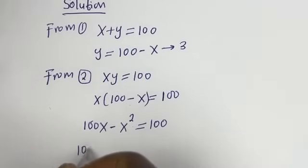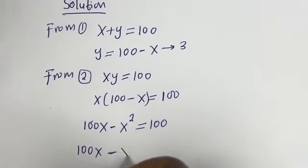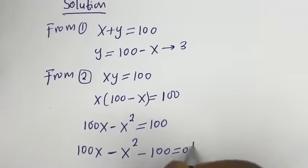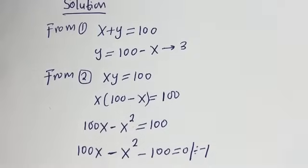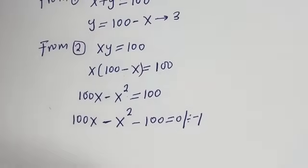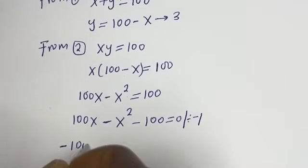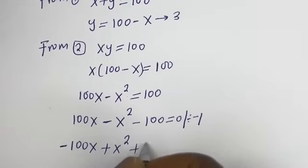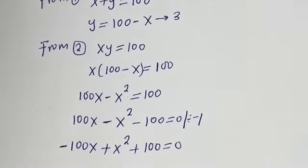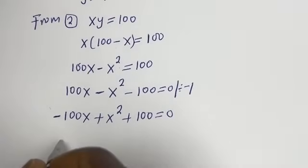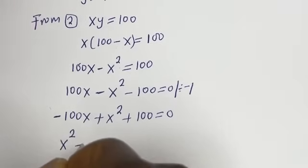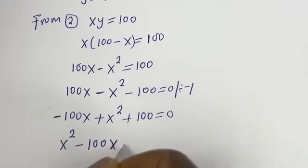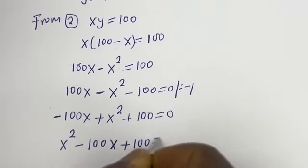Then we have 100x minus x squared minus 100 is equal to 0. Let's divide all terms by minus 1: we get minus 100x plus x squared plus 100 is equal to 0. We can put this in standard form: x squared minus 100x plus 100 is equal to 0.